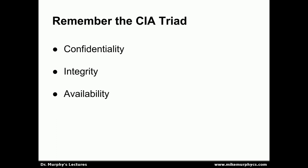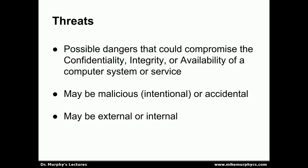Recall from the Introduction to Security lecture the CIA triad — this stands for confidentiality, integrity, and availability. These are the three principles to which we want a system to adhere in order for that system to be secure. Threats are possible dangers that could compromise the confidentiality, integrity, or availability of a computer system or service.